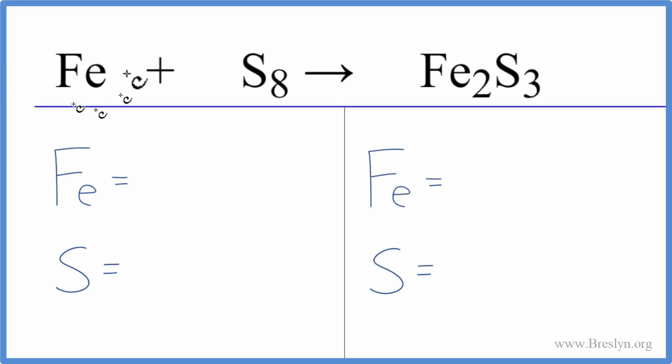In this equation, we have iron, solid iron, plus S8, that's called octosulfur, and they're combining to form Fe2S3, that's iron 3 sulfide.